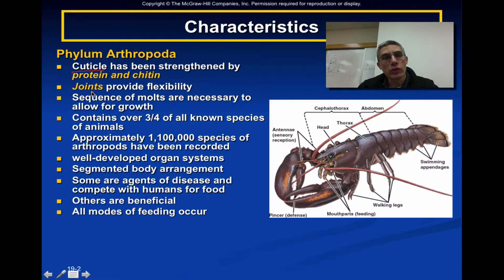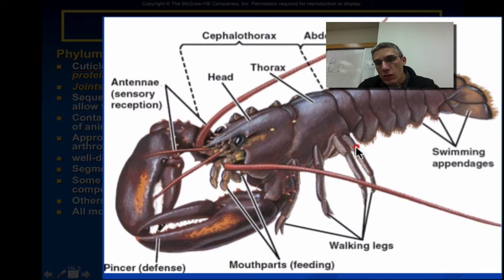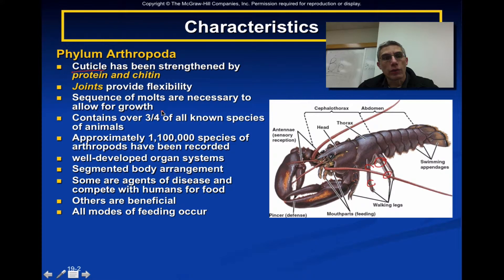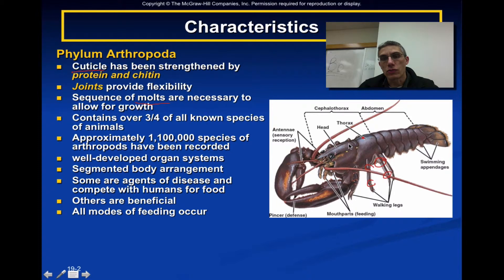Joints have formed between certain parts of the appendages, which you can see on the animal shown here. These joints allow flexibility so the appendages can help move the animal through its environment. In order to grow, because they have a rigid exoskeleton, arthropods must go through a series of molts. They shed the old exoskeleton, and a softer exoskeleton beneath it hardens over time.